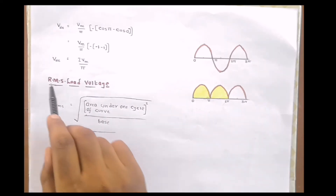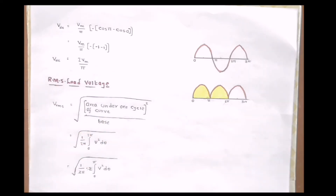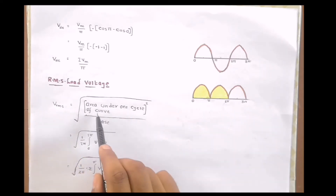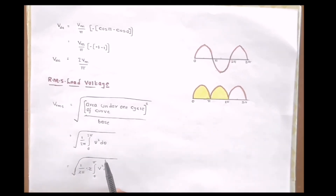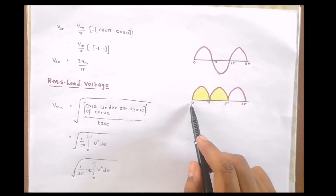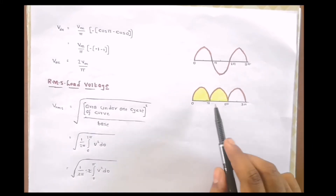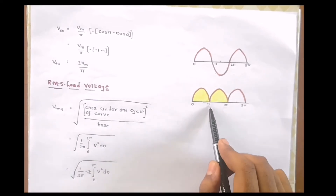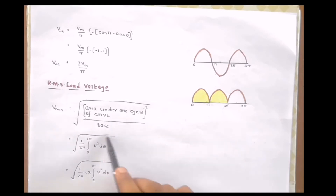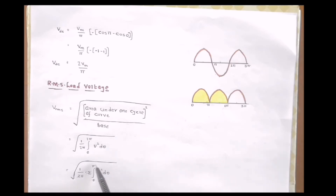Now let us obtain the value of RMS load voltage of a full wave rectifier. Vrms = √(area under one cycle of curve squared / base) = √((1/2π) × ∫₀^{2π} V² dθ). Since the output from 0 to π is the same as from π to 2π, we integrate from 0 to π and multiply by 2, then cancel the two's.